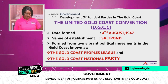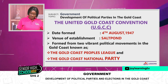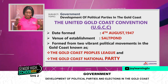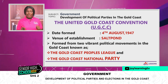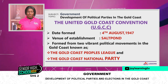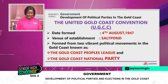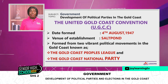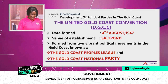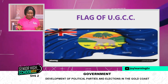It was formed from two vibrant political movements in the Gold Coast known as the Gold Coast People's League and the Gold Coast National Party. These were political movements — not political parties — groups that had formed to agitate for some sort of self-rule. The leadership of the UGCC put the two groups together to become the UGCC.